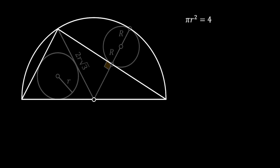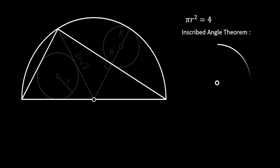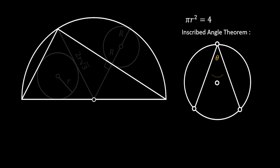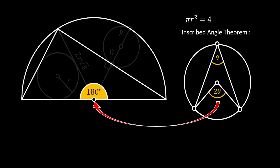Now let's concentrate on this triangle on the sketch. We will use another circular theorem called the inscribed angle theorem. It states that an inscribed angle inside a circle is always half the measure of the central angle that subtends the same arc. As you can see on the sketch, the central angle here is 180 degrees, so the inscribed angle that subtends the same arc must be half of that — a 90-degree angle.